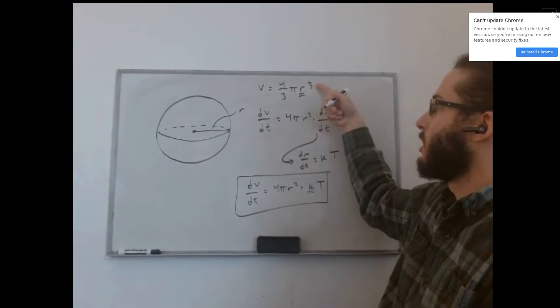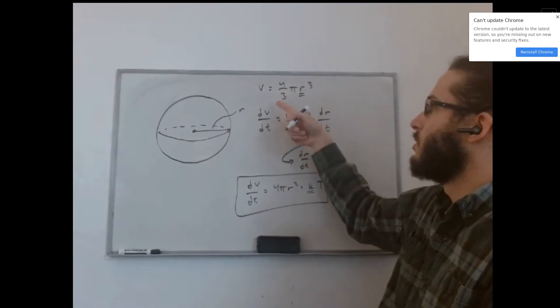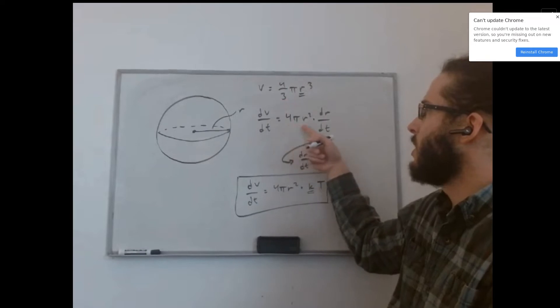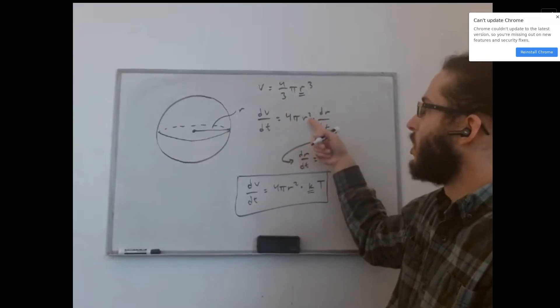We bring the exponent three down and multiply it by the constant four-thirds pi, which leaves us with just four pi, and then we decrease it by one, and the exponent turns into a two.